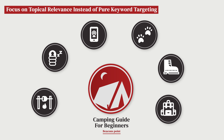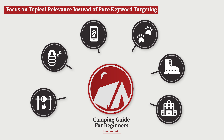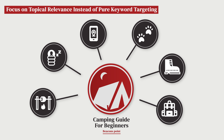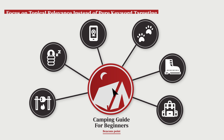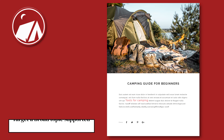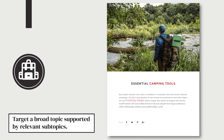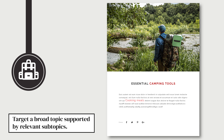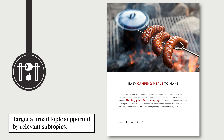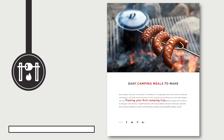Topic clusters are built around a single piece of pillar content targeting a broad topic with high search volume. From there, your pillar content is internally linked to your subtopic cluster content. Cluster content comprises several related but more narrowly focused topics.